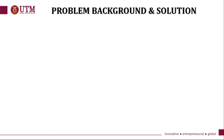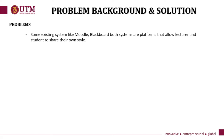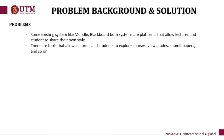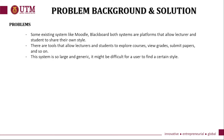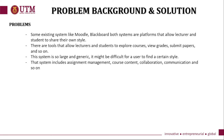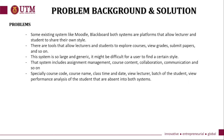Now, problem background and solution. Based on this proposed project, we have some existing systems. I took two existing systems: Moodle and Blackboard. Moodle and Blackboard are platforms that allow lecturers and students to share documents in their own style. There are tools that allow lecturers and students to explore courses, submit papers, view grades, and so on. However, these systems are so large and generic it might be difficult for users to find certain information. Both systems include assignment management, collaboration, communication, and so on, but they lack features like course code, course name, course time and date, lecturer view, and performance analysis for absent students.